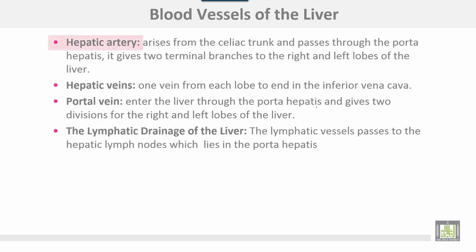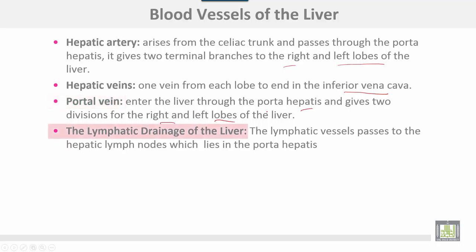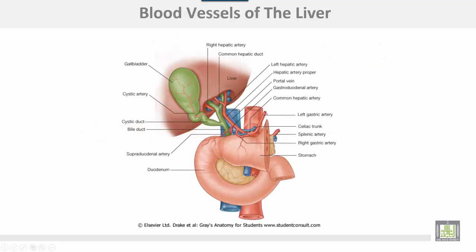The hepatic artery arises from the celiac trunk and passes through the porta hepatis, giving two terminal branches to the right and left lobes of the liver. The hepatic veins — one from each lobe — drain directly into the inferior vena cava. The portal vein enters the liver through the porta hepatis and divides into right and left divisions for the respective lobes. For lymphatic drainage, lymph vessels pass to the hepatic lymph nodes lying in the porta hepatis.